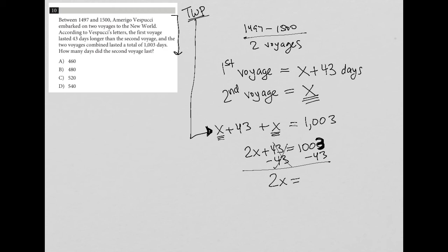1003 minus 43 in my calculator gives me 960. I then divide both sides of this equation by 2, and I'm left with X equals 960 divided by 2 in my calculator, which is 480.